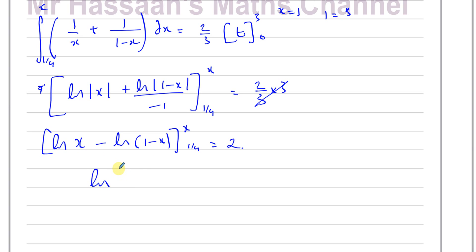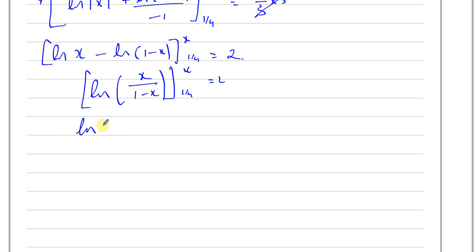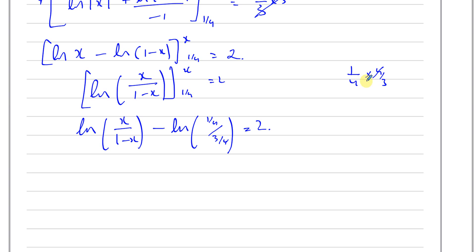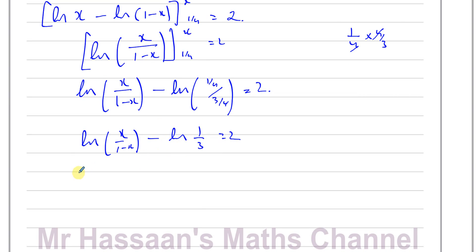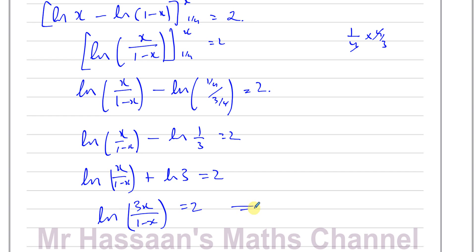Applying the limits: ln(x/(1 minus x)) minus ln((1/4)/(3/4)) equals 2. The lower limit gives 1/3, so we have ln(x/(1 minus x)) minus ln(1/3) equals 2. Rewriting: ln(x/(1 minus x)) plus ln(3) equals 2, which by the logarithm product rule gives ln(3x/(1 minus x)) equals 2.